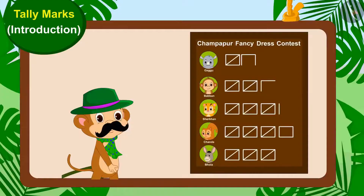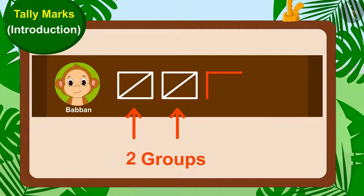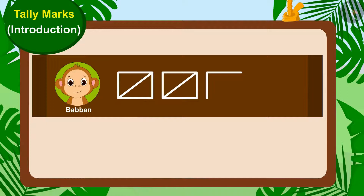Children, can you tell us how many votes Babban has got? Yes, absolutely right. There are two groups of tally marks and two lines in front of Babban's name. This means Babban has got 12 votes.